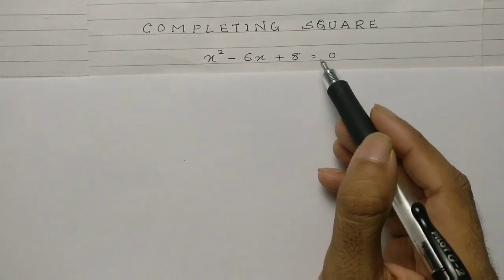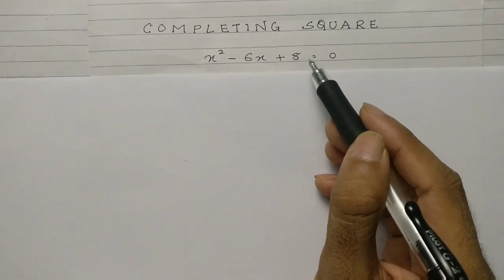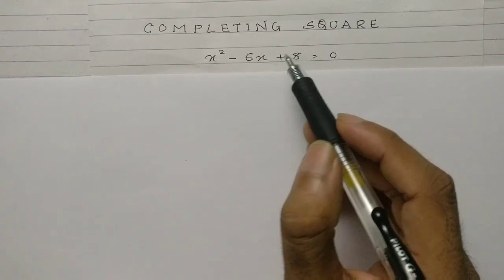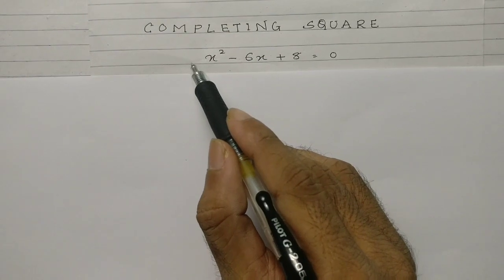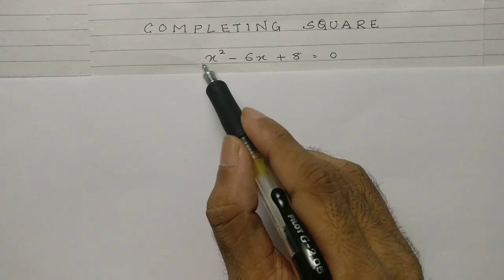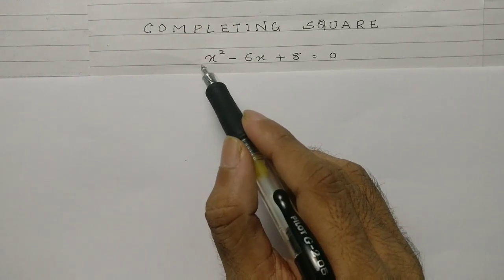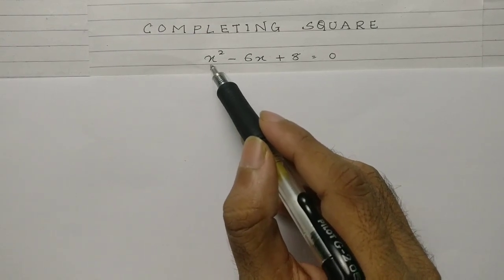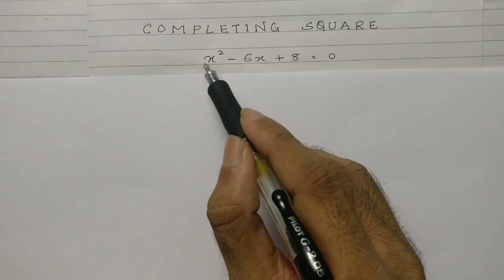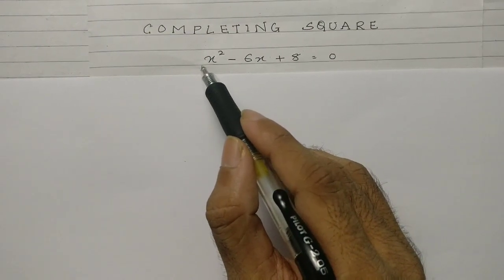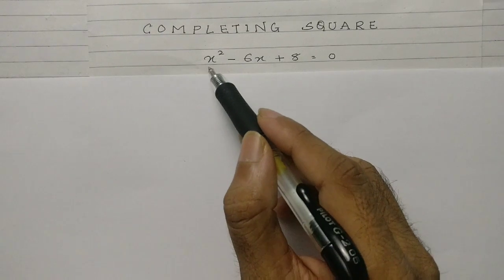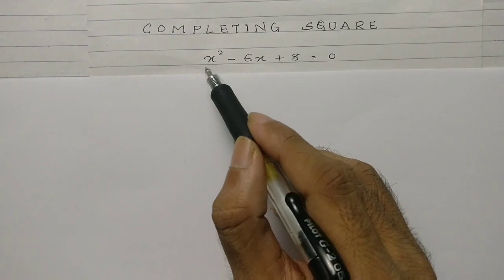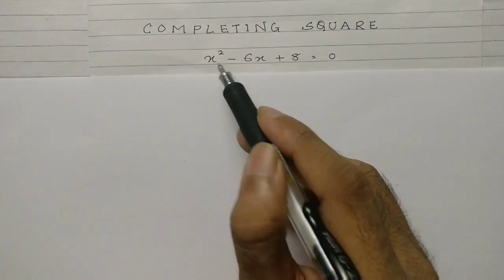Before you start solving with the completing the square method, you have to check whether the coefficient of x squared is 1 or any other number. If it is 1, then you are good to go to the second step. If it is not 1, then there is another step that you have to do — we will try that in the next problem. Right now since it is 1, we proceed.